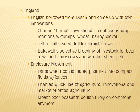England borrowed from the Dutch and came up with its own innovations. Charles 'Turnip' Townshend advocated continuous crop rotation with turnips, wheat, barley, and clover. Jethro Tull — not the band — invented the seed drill for straight rows of planted seeds. Bakewell emphasized selective breeding of livestock for beefier cows, milkier dairy cows, and woolier sheep. The enclosure movement saw landowners consolidate pastures into compact fenced fields. It enabled quick use of agricultural innovations and market-oriented agriculture, but meant poor peasants could no longer rely on the commons.